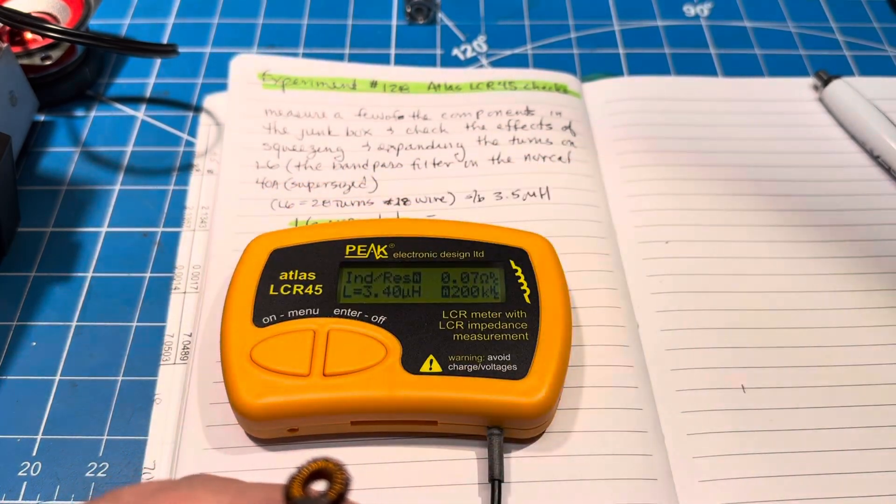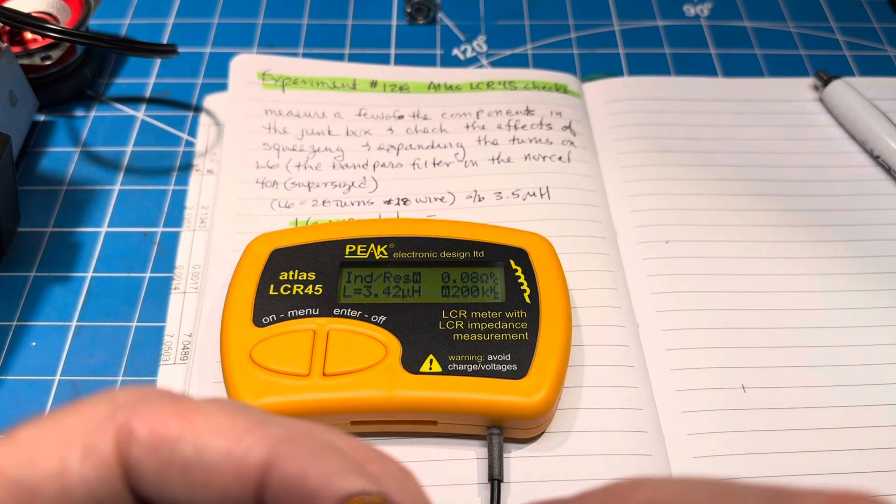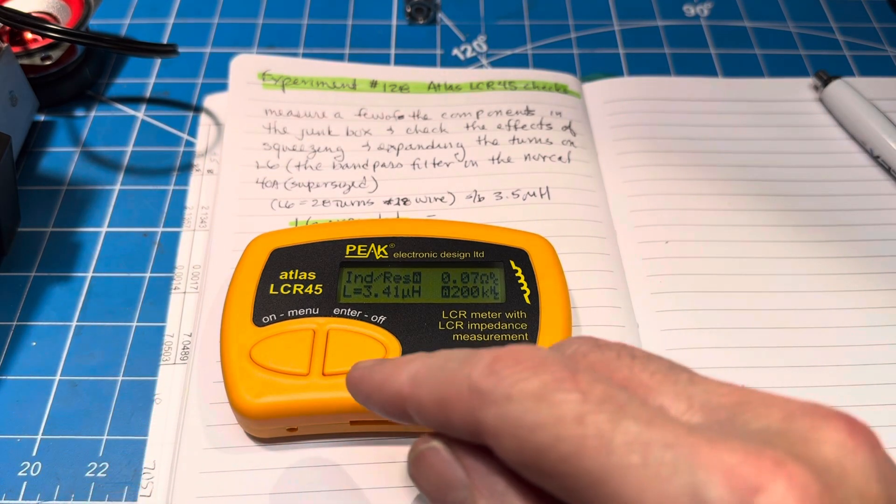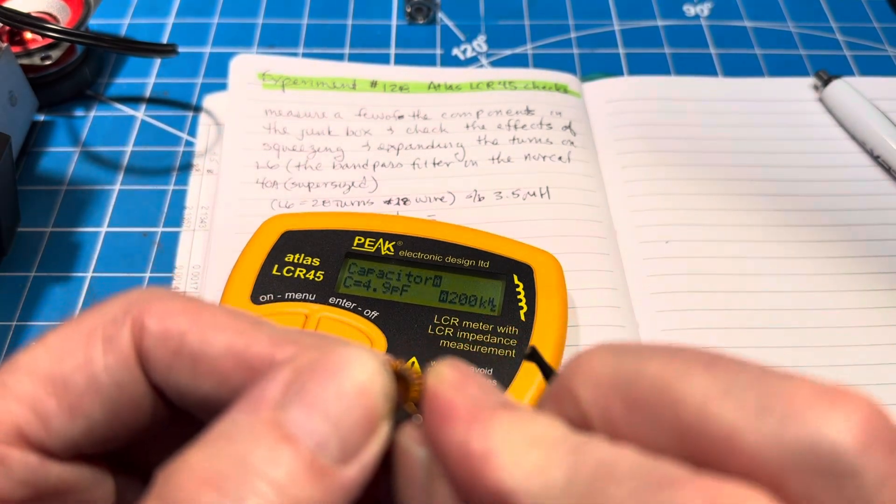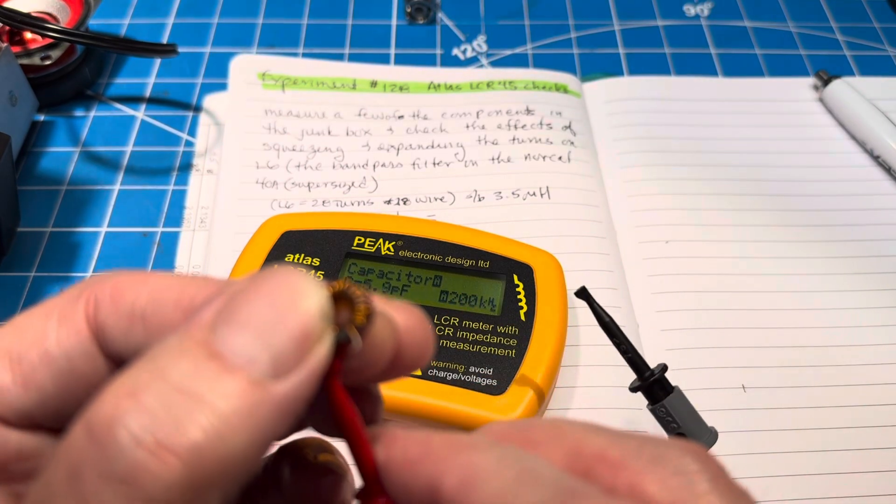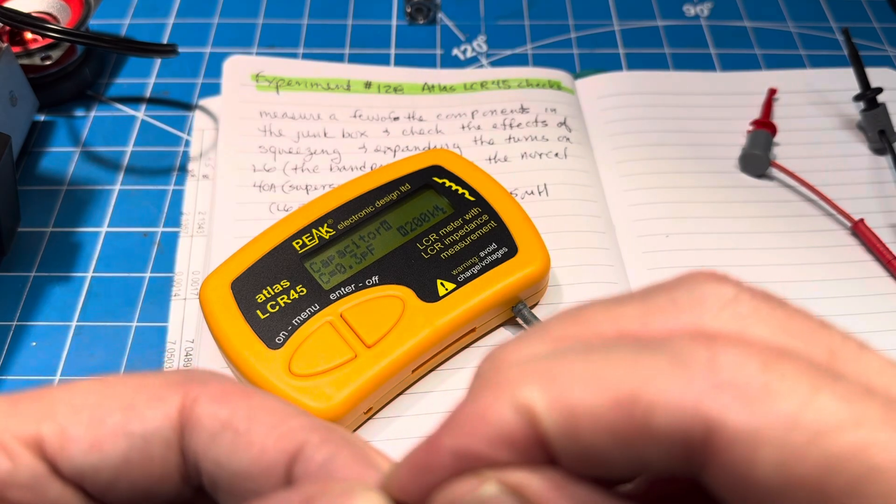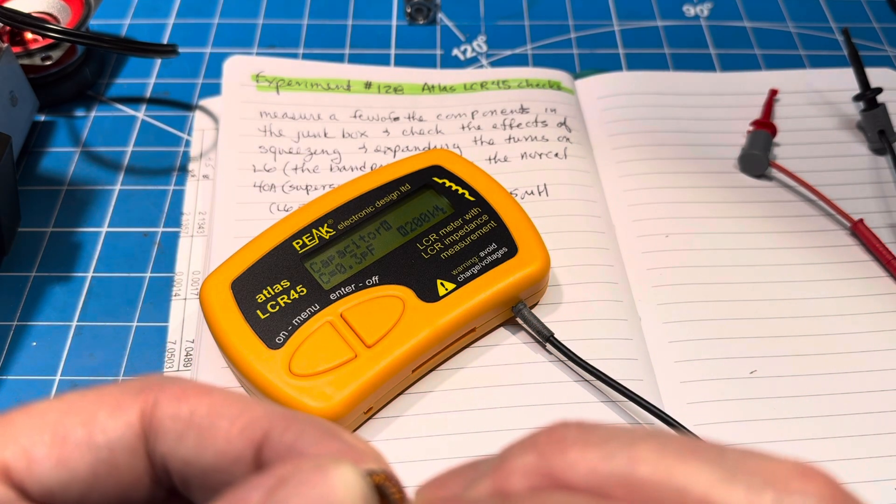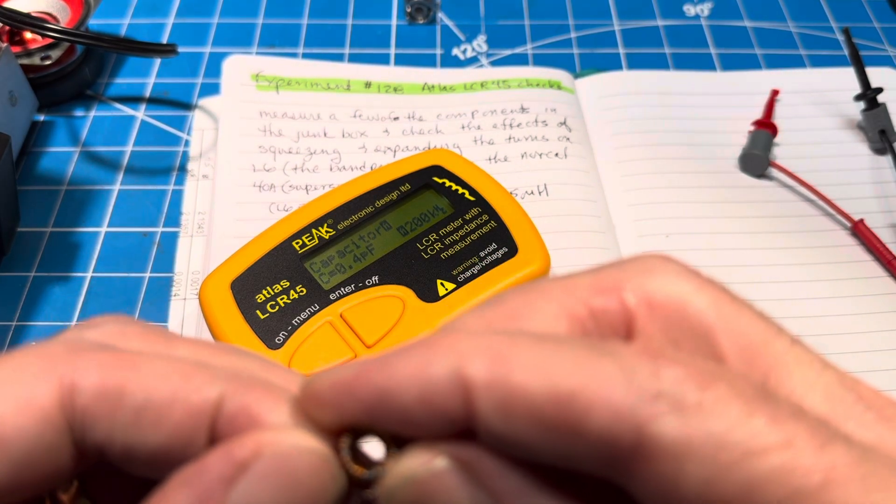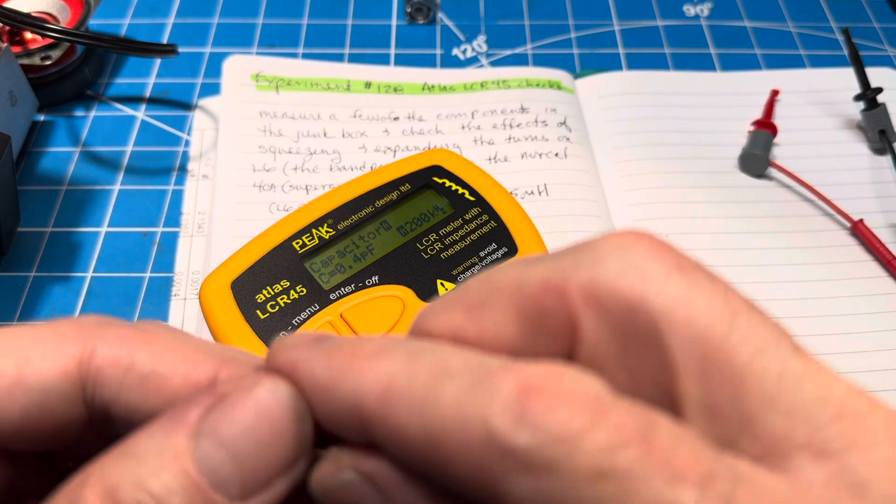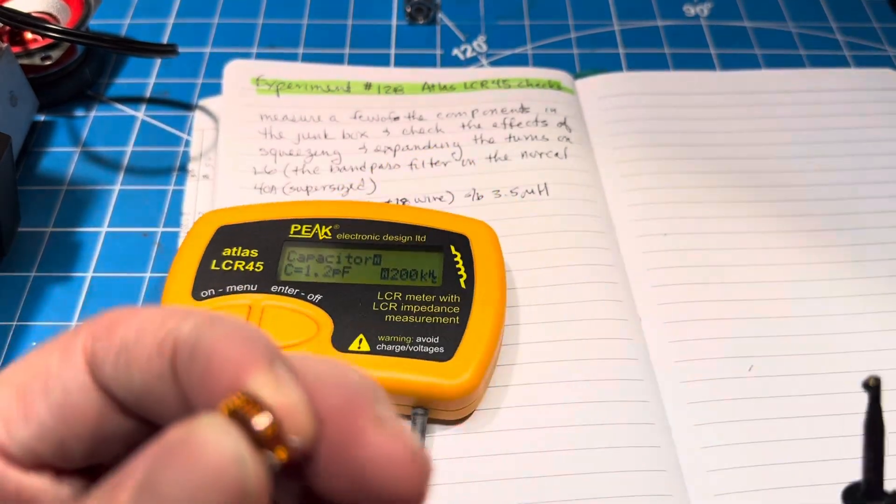Then somebody in the comments said, why don't you adjust the turns or squeeze them more? It's kind of interesting with this meter, we can do that. So we'll unhook it for just a second and I'll spread the turns out as evenly as I can. It may not be perfect, but it'll be close. It looks pretty spread out anyway, you can give me a grade for effort on that.